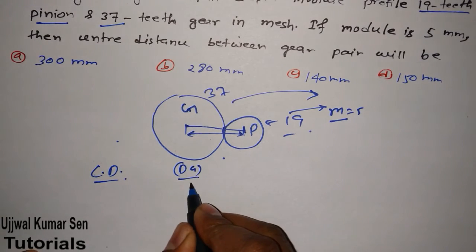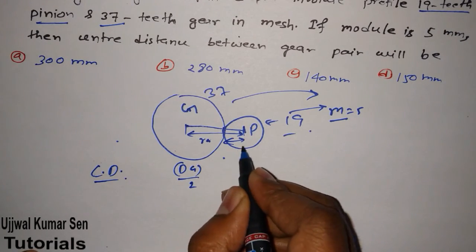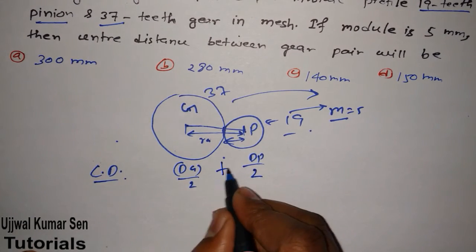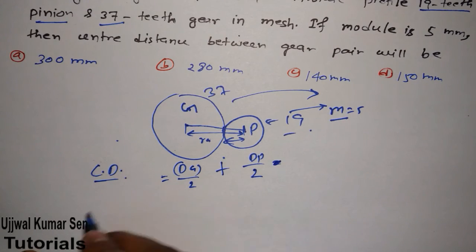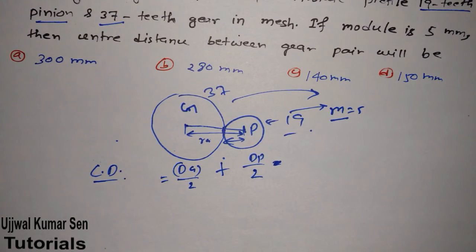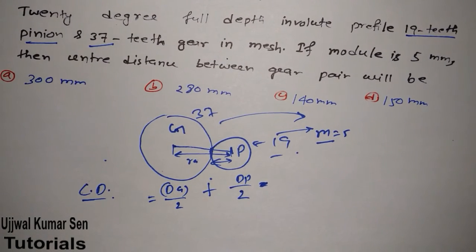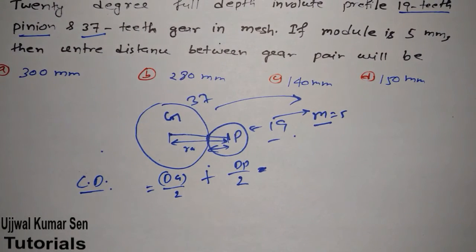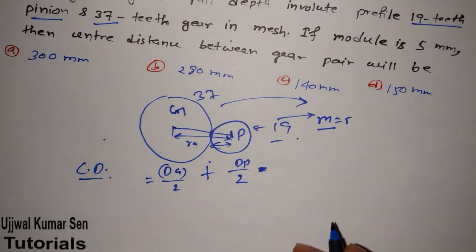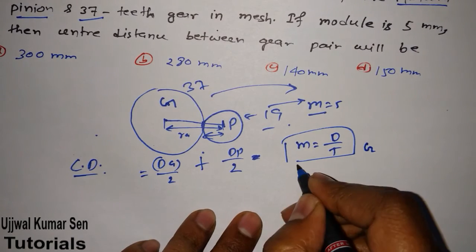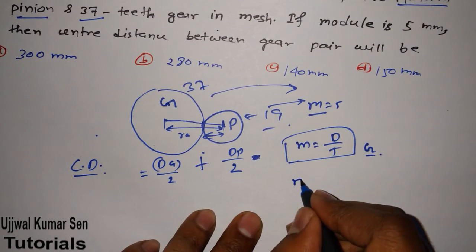To find center distance, we find the diameter of the gear, divide by 2 to get its radius, then find the diameter of the pinion, divide by 2, and add both radii together. We use the module formula: module = D / T, so D = M × T.